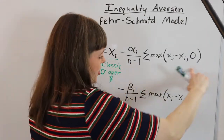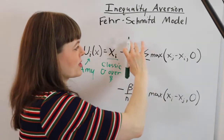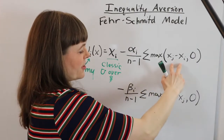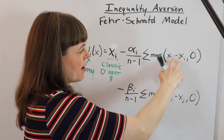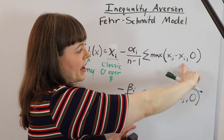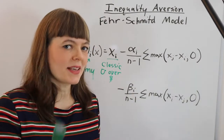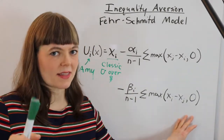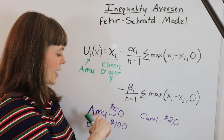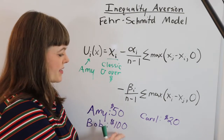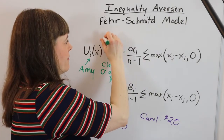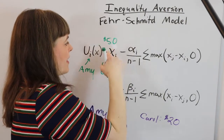These next two terms look pretty similar, so once we understand one we'll pretty easily understand the other. I'm going to start here because this is really the centerpiece of this model — it's the difference between what somebody else gets and what Amy gets. It would be easier to explain with an example, so let me add that. Our scenario is: Amy gets fifty dollars, Bob gets a hundred dollars, Carol gets twenty. So classic consumption utility gives Amy a value of fifty for the money she actually gets.